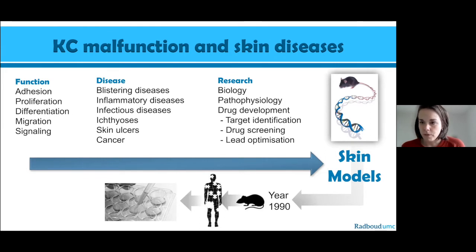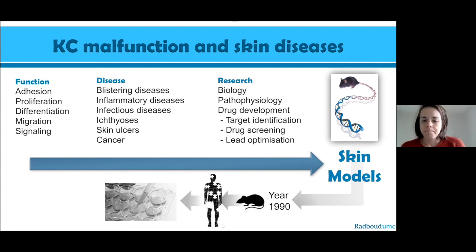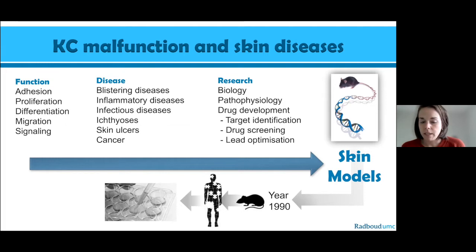Traditionally, most of this research has been done in transgenic and knockout experimental mouse models to study gene function and genotype-phenotype correlations. But there has been a real surge in studies now using organotypic models as alternatives to in vivo mouse models. A big driver was the ban on animal testing for cosmetics, creating a need for organotypic skin models for safety testing and toxicology, and now we're using these in scientific studies as well.